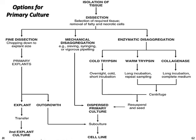For enzymatic disaggregation, there are three methods: cold trypsin, warm trypsin, or collagenase. Cold trypsin requires overnight cold incubation and a short incubation time. Warm trypsin requires a longer incubation with repeated sampling. Collagenase requires long incubation plus complete medium. After disaggregation, you centrifuge to remove the proteases, then re-suspend and seed, giving you a dispersed primary culture that can be subcultured to establish a cell line.